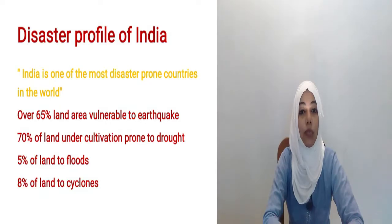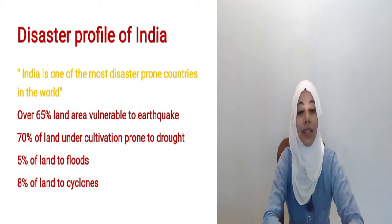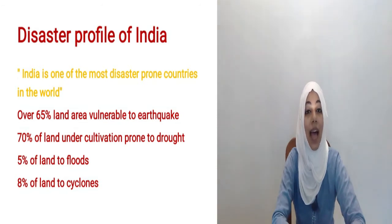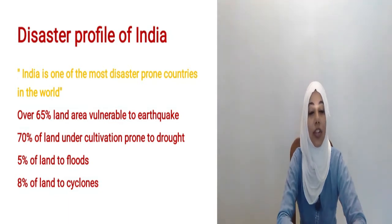Disaster Profile of India. India is one of the most disaster prone countries in the world. Over 65% of land area is vulnerable to earthquake. 70% of land under cultivation is prone to drought, 5% of land to flood, and 8% of land to cyclones.